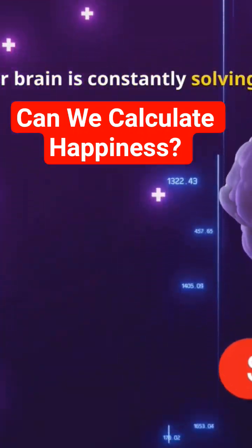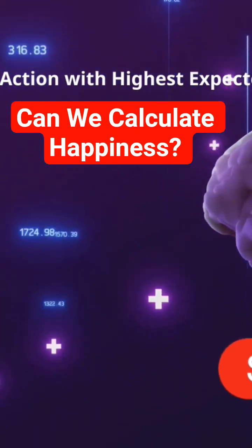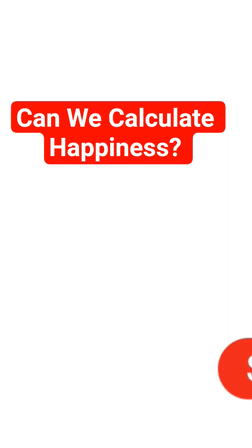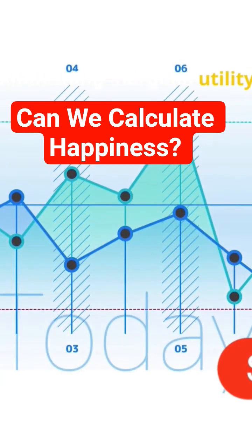Your brain is constantly solving an optimization problem. Maximize happiness equals choose action with highest expected utility. But here's the catch: happiness doesn't always grow forever. Economists call it the law of diminishing marginal utility.